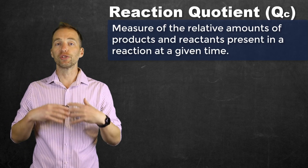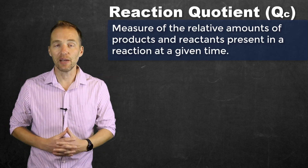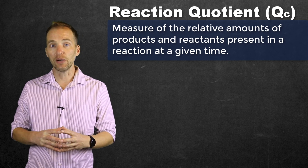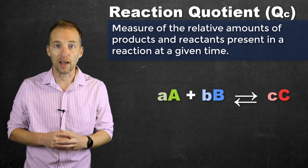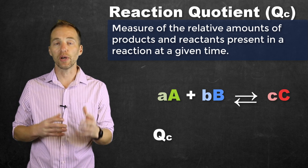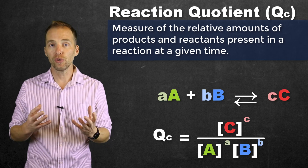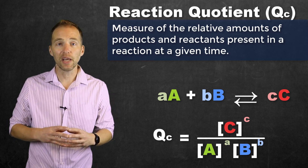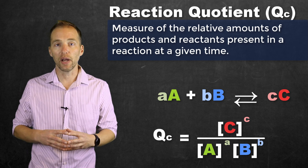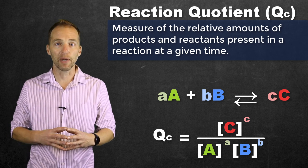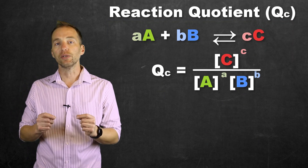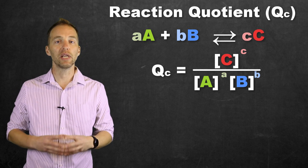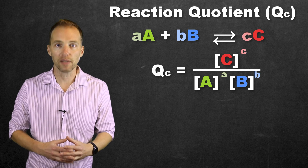The reaction quotient is derived in almost exactly the same way that the equilibrium constant is — from the equilibrium equation. We raise the concentrations of reactants and products to the appropriate exponent representing the coefficient from the balanced chemical equation, with products in the numerator and reactant concentrations in the denominator. We then take the value calculated for the reaction quotient and compare it to the equilibrium constant.